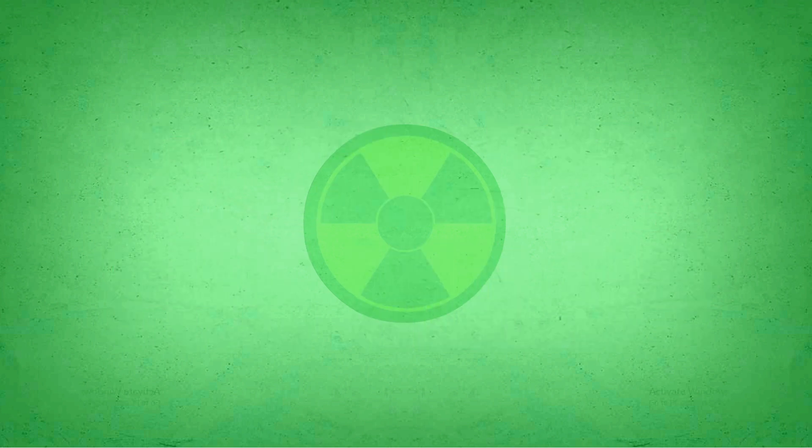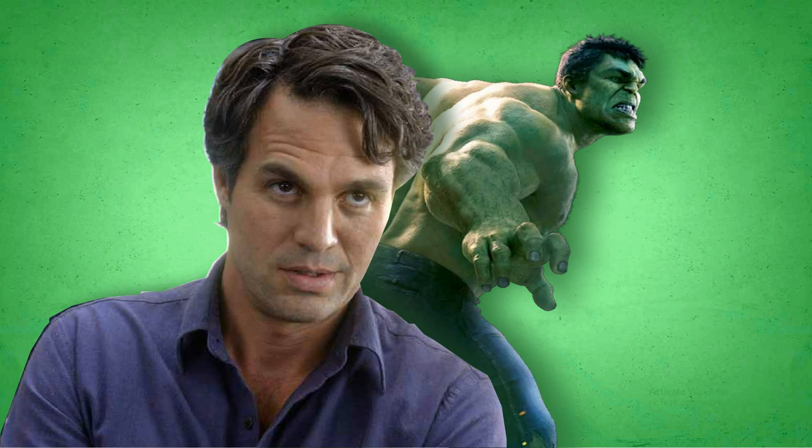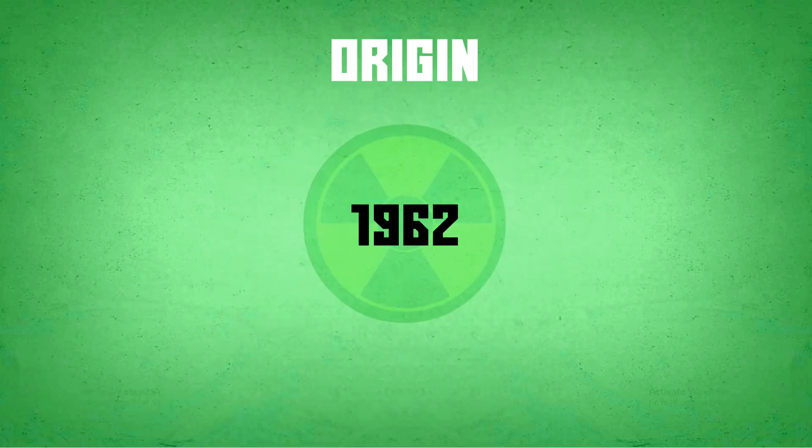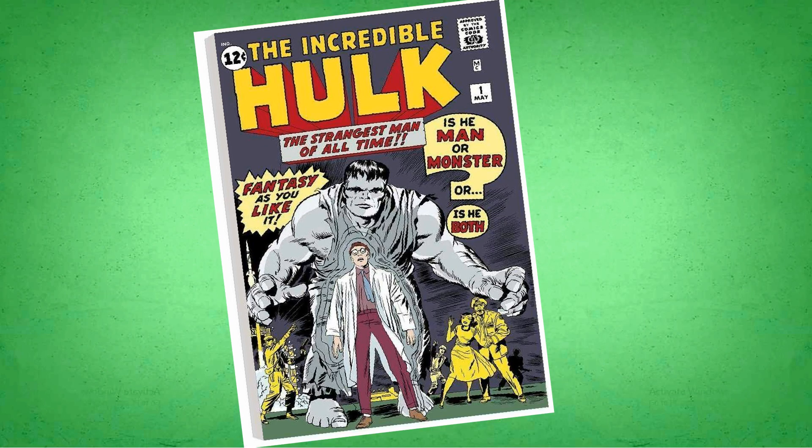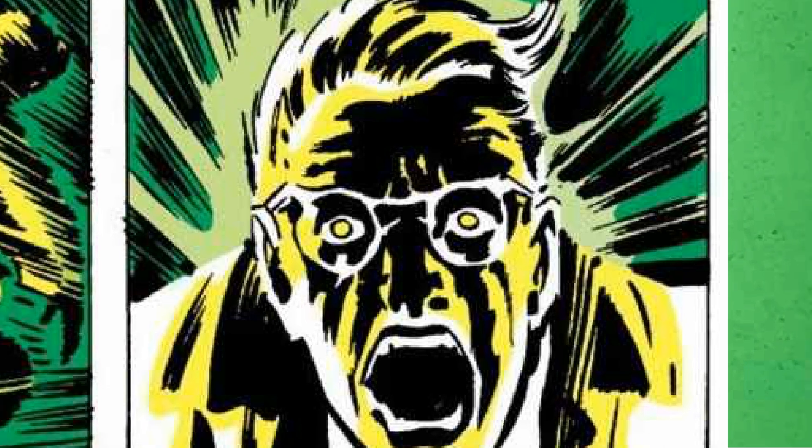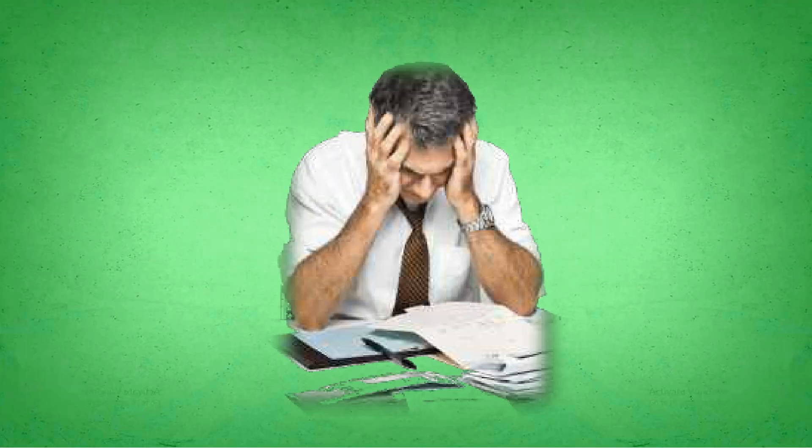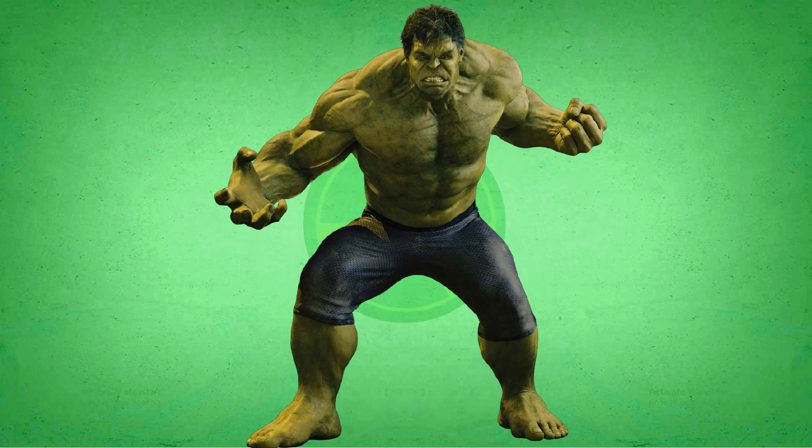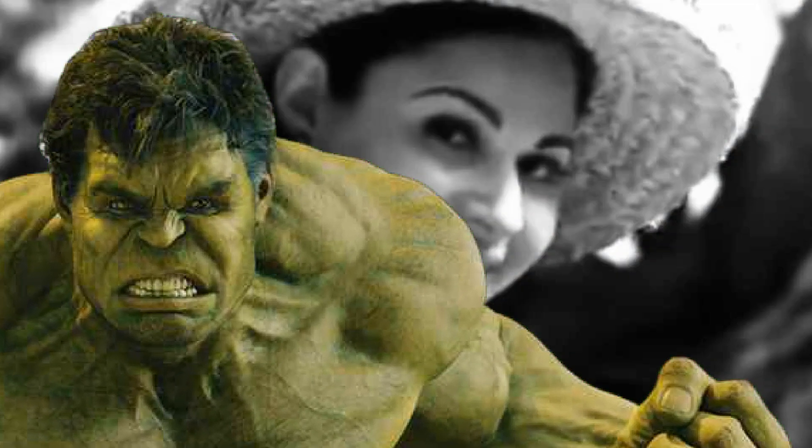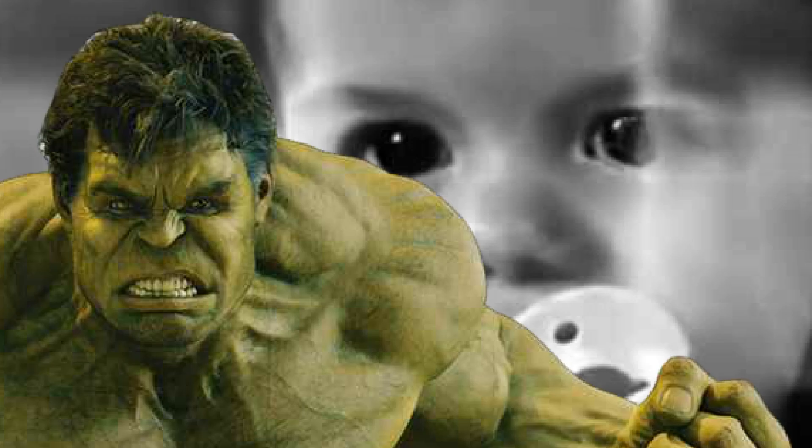First of all, how did Bruce Banner become the Hulk? The origin starts way back from 1962 when he first appeared in Marvel comic books. He was accidentally exposed to gamma rays during the detonation of an experimental bomb. Banner is physically transformed into the Hulk when subjected to emotional stress at or against his will. And also, Banner used to suffer from personality disorder from his childhood.